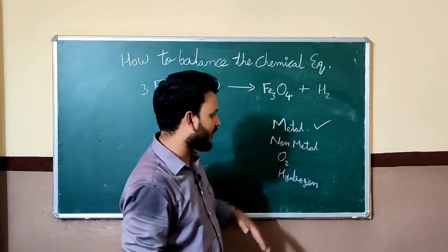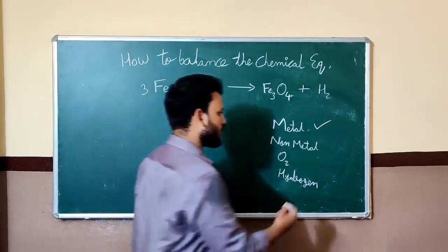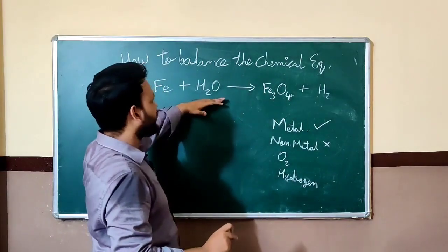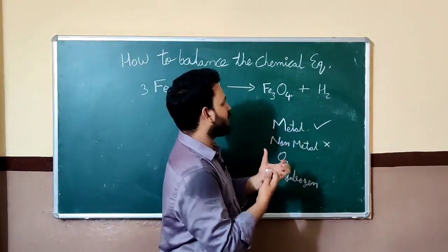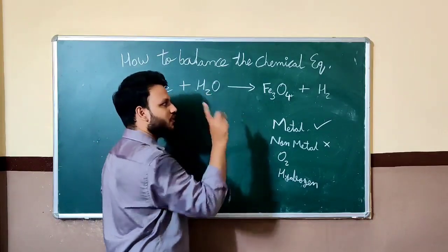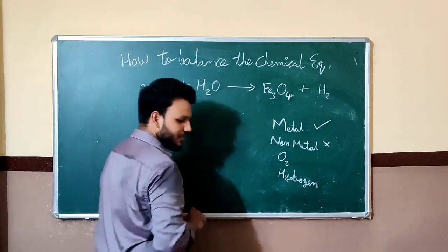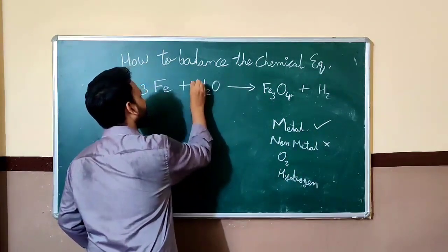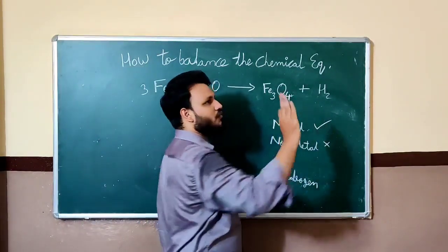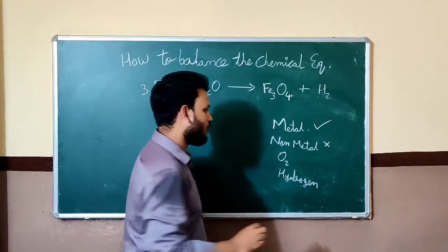Moving to the second thing — non-metal. Is there any non-metal available? No, there is no non-metal. So no issue. Moving to the next one — oxygen. LHS also has a certain amount of oxygen, and the RHS also. The number of oxygen on the LHS is only 1 and on the RHS it is 4. To balance it, we multiply by 4 here. Now the number of oxygen on the LHS is 4 and on the RHS is also 4. Oxygen is now balanced.